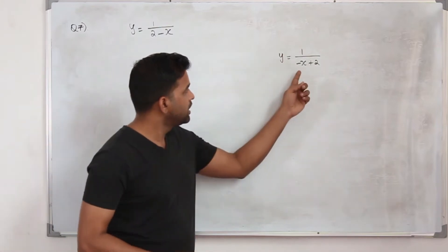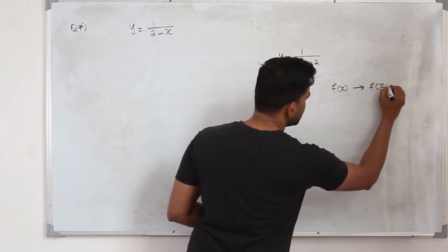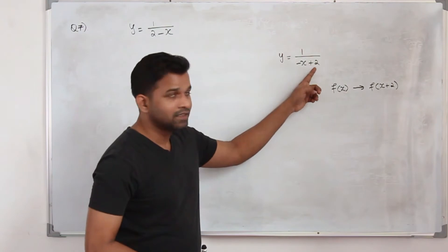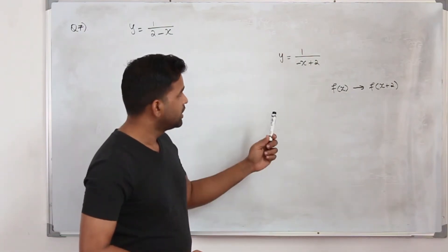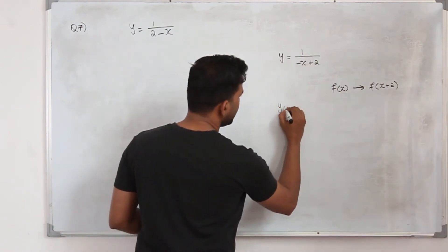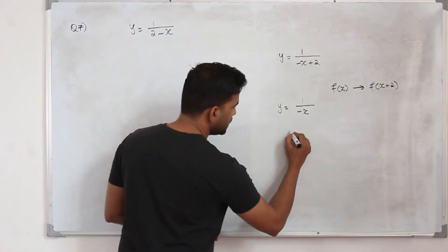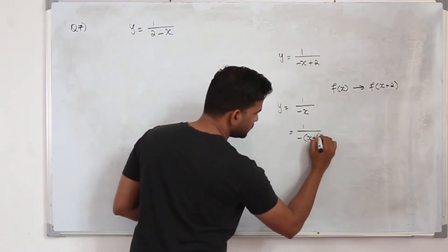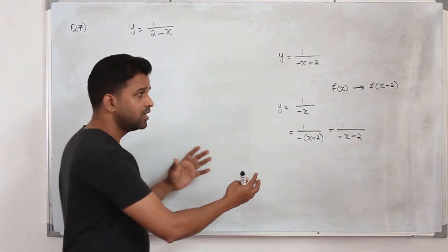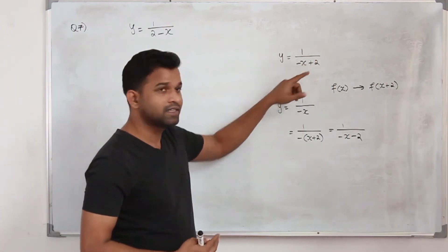Just because you see minus x plus 2, don't think this is a translation of 2 units to the left. In graphs and transformations, if we replace f(x) by f(x+2), the graph shifts left 2 units. But here you are not adding 2 to x in that way — you are not adding 2 to the graph. So don't jump to the conclusion that this is a translation to the left side.